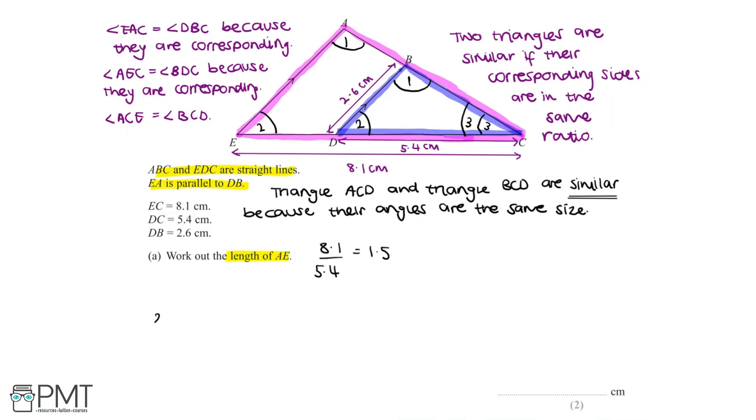We know that DB equals 2.6cm, and so to get to length AE, we need to multiply by the scale factor calculated above. So we can now find AE by doing 2.6 multiplying by 1.5 and getting a final answer of 3.9cm, which we can write in the answer box below.